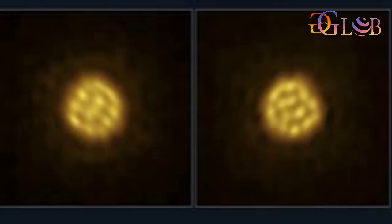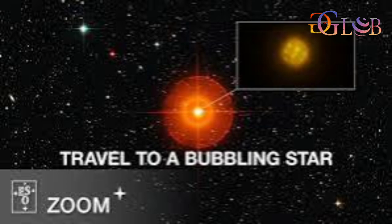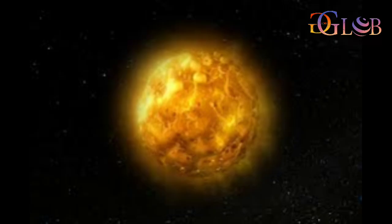The stellar surface produces energy in its core through nuclear fusion. This energy can be carried out towards the star's surface, and then the hot bubbles of gas cool down and sink like a lava lamp.